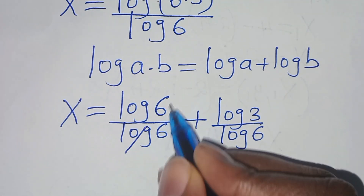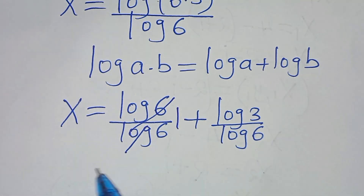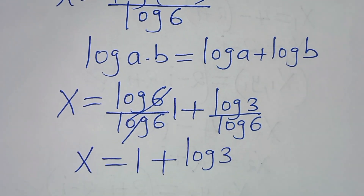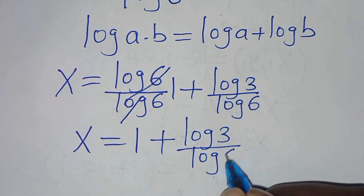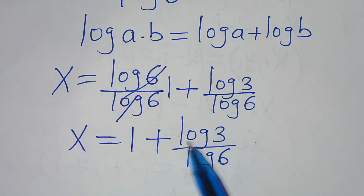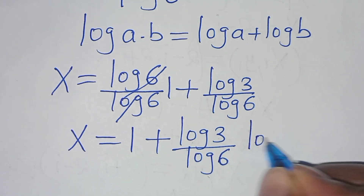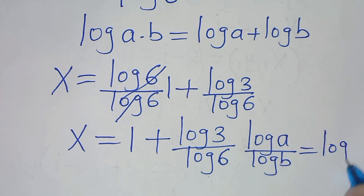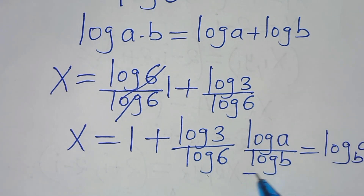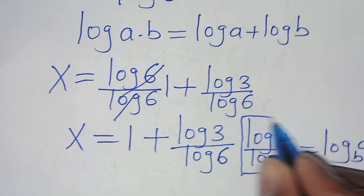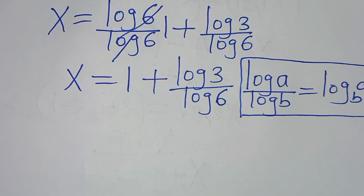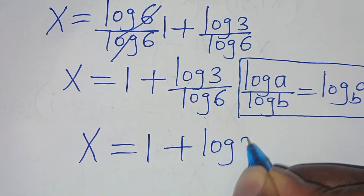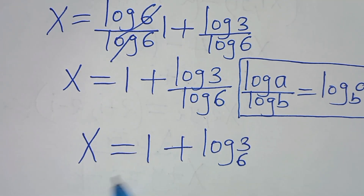The next step is to simplify here, so that now we have x is equal to 1 plus log 3 divided by log 6. And since log 3 divided by log 6 can be expressed as log₃ base 6, x is equal to 1 plus log₃ base 6. This is the value of x.